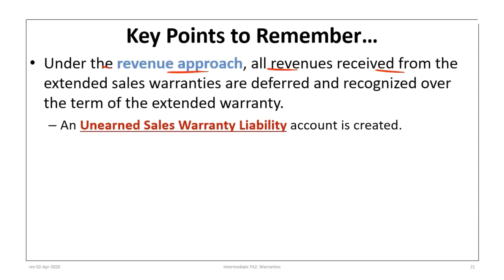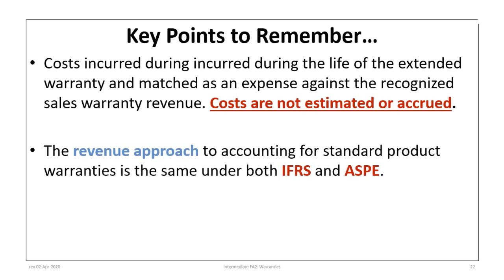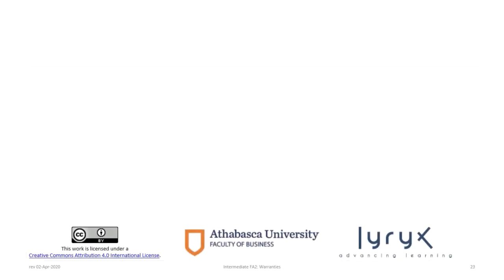Under the revenue approach, all revenues received from extended sales warranties are deferred and recognized over the term of the extended warranty. Even though the company collects the money when the extended warranties are sold, revenue cannot be recognized until the extended warranty period begins, creating an unearned sales warranty liability. As the extended warranty periods kick in, amounts are transferred from that account to earned warranty revenue. Any costs incurred during the life of the extended warranty are matched as an expense against the recognized revenue — costs are not estimated or accrued in advance. This approach is the same under both IFRS and ASPE.